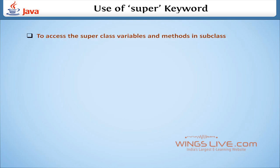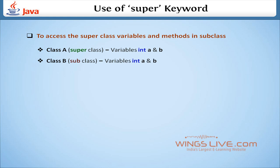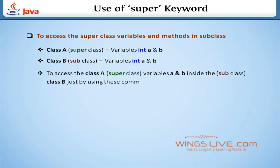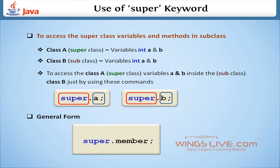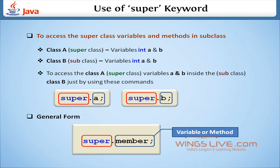The first purpose is to access superclass variables and methods in a subclass. Class A is the superclass that has two integer variables A and B. Class B is the subclass that also contains two integer variables A and B. We can access class A's variables A and B inside the subclass class B using: super.A; and super.B; — where super is the keyword and A and B are variables. The general form is: super.member; where member can be either an instance variable or a method.